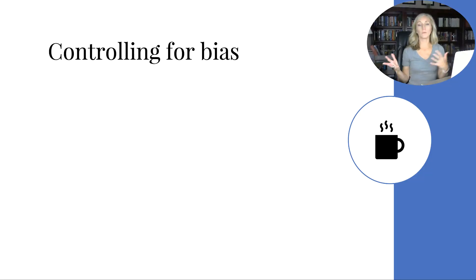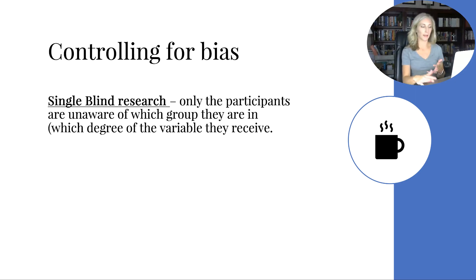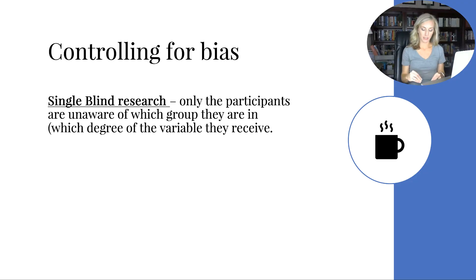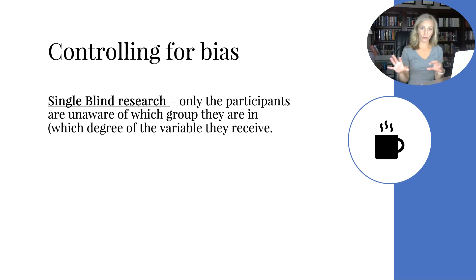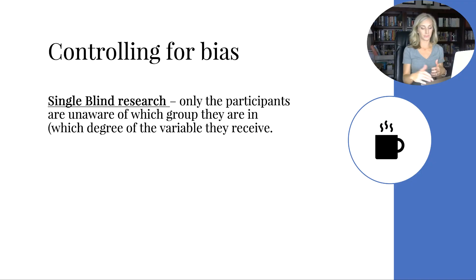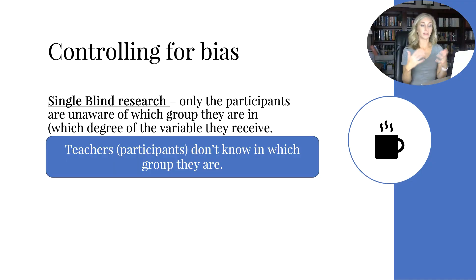Since humans are conducting the research, we have to control for bias. Single-blind research is where the participants don't know if they are getting the real thing or the placebo — they don't know which degree of the variable they receive, meaning they don't know if they're in the experimental or control group. In our experiment, that means the teachers don't know whether they're getting caffeine or not.